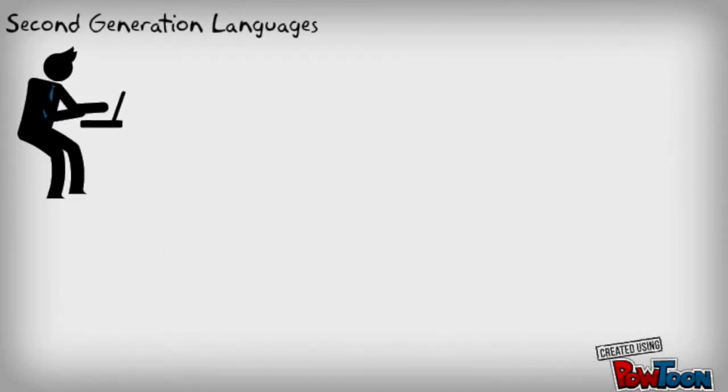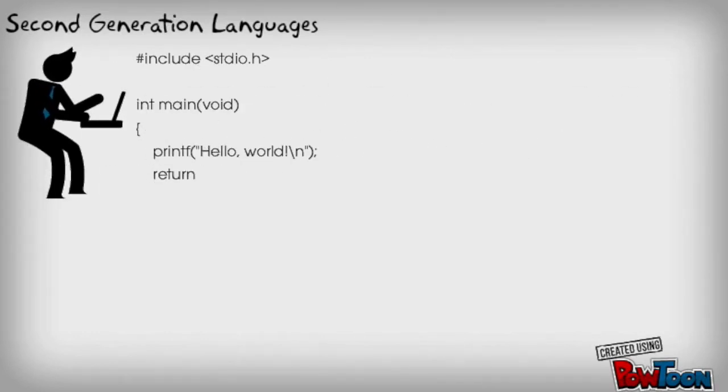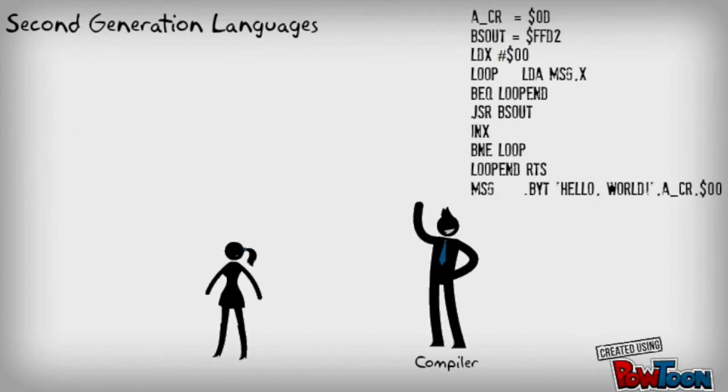So in order to resolve this, we created what was called second-generation languages. And these were more elegant. These allowed us to create things in a more human-readable form. And then we used this thing called a compiler, and the compiler would turn around and end up creating the assembly language for us.